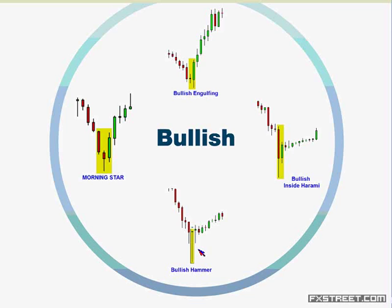Flags are slightly different. Instead of taking the width of the actual flag, you want to take the flag pole — the actual length of the flag pole from the breakout line — and then project that length back up or down, whichever way it may be.